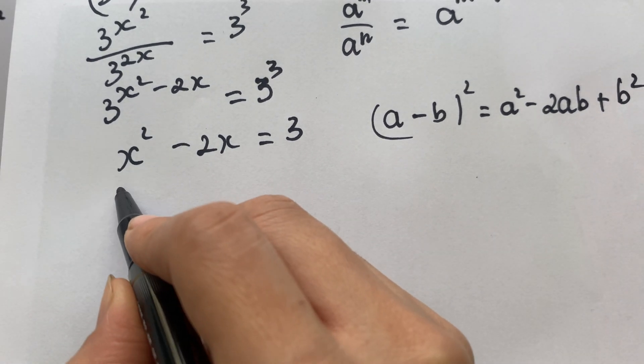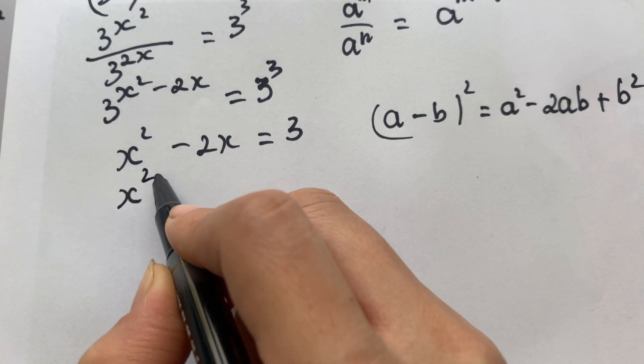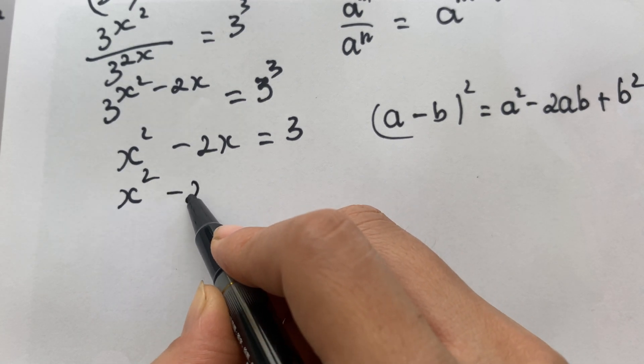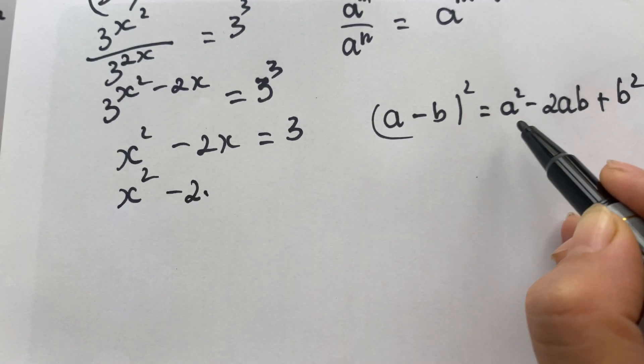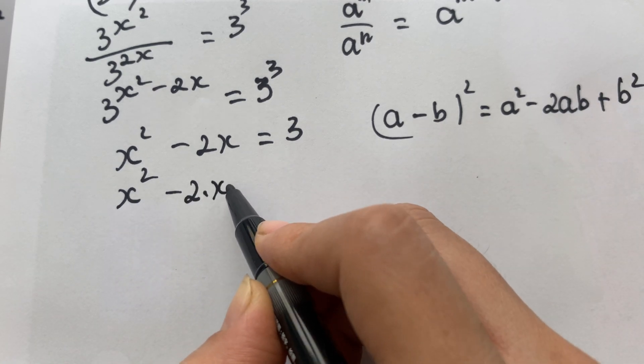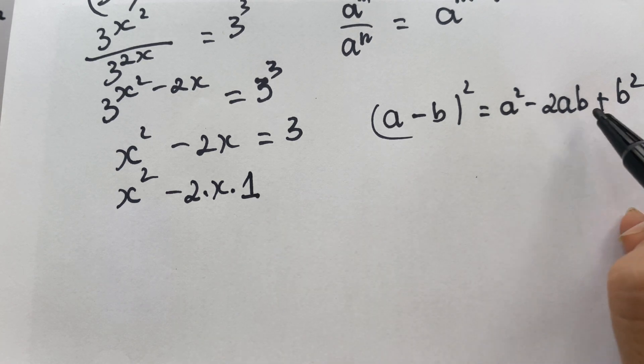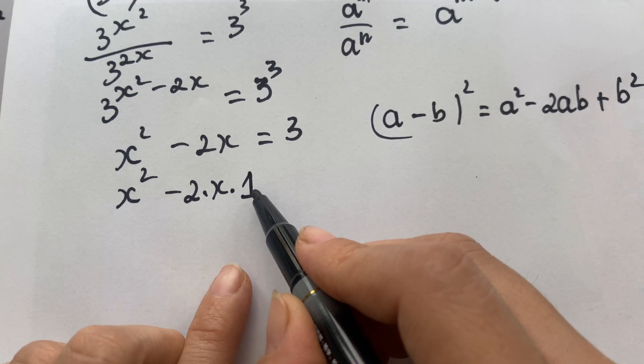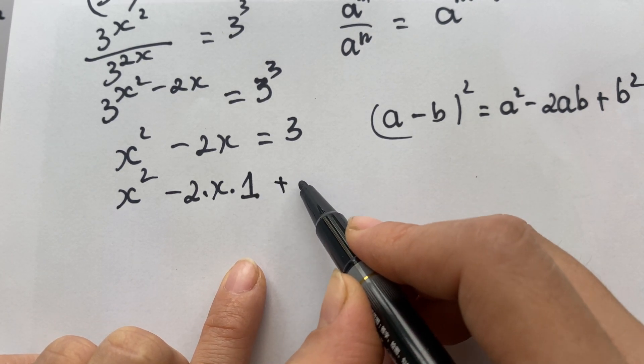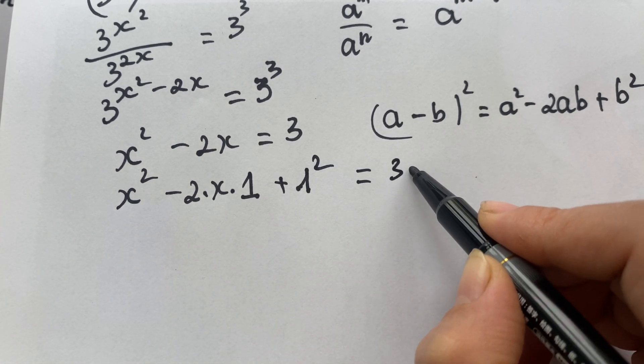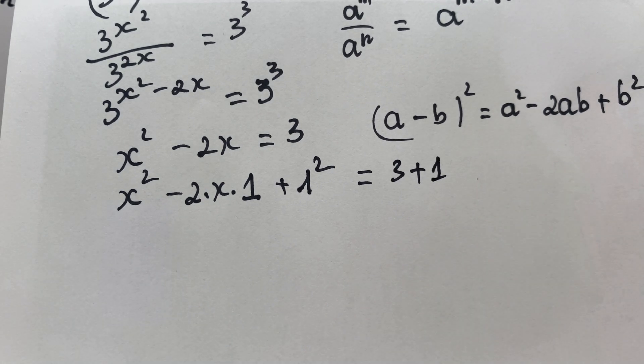Therefore we have x square minus 2 times x times 1, and B is equal to 1. You need to plus 1 square equals 3 plus 1. It means that you need to add 1 to both sides.